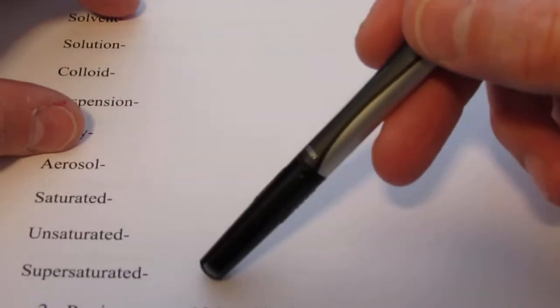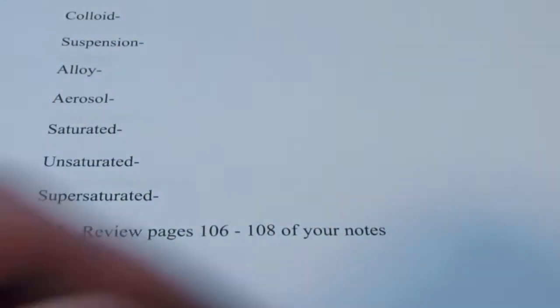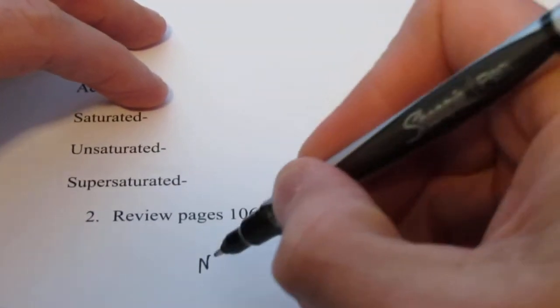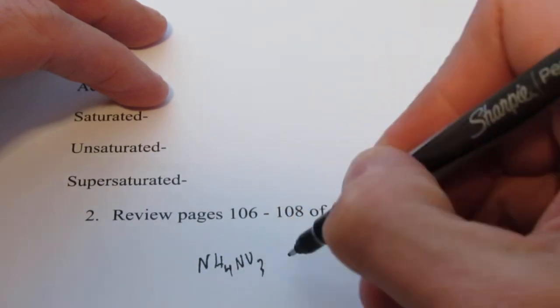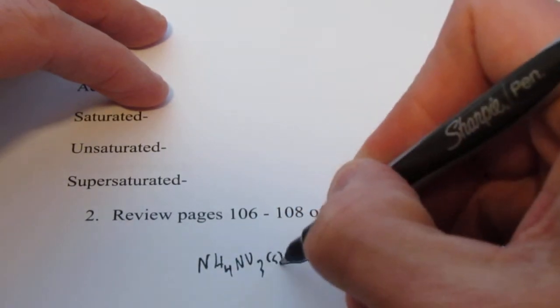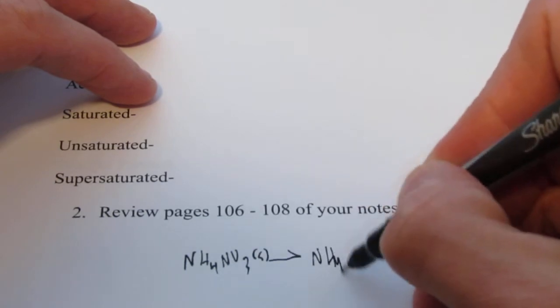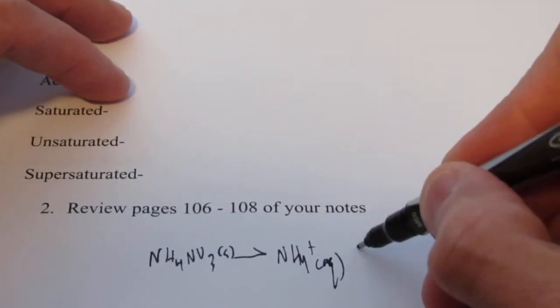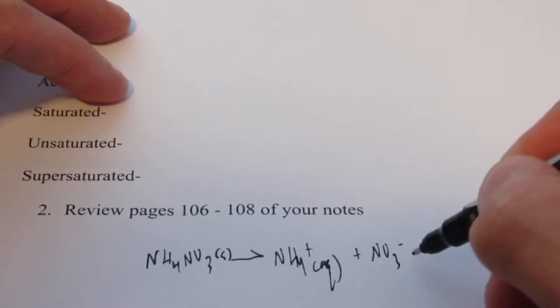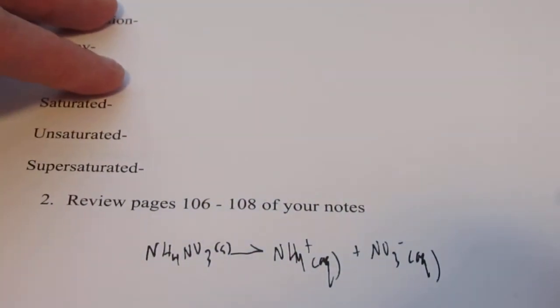Also review pages 106 through 108 in your notes. That talks about heats of solution. Remember a couple of demos that we did. There was one where we took ammonium nitrate and that was a solid, and we dissolved it in water. So we dissociated the ions into ammonium and nitrate ions. Remember that? And it got cold.